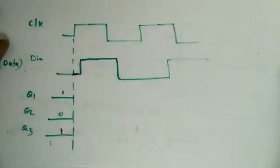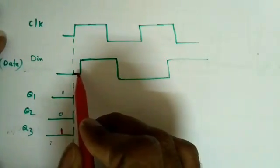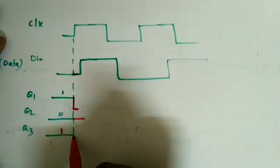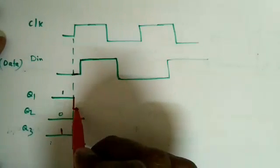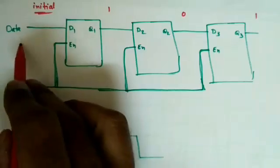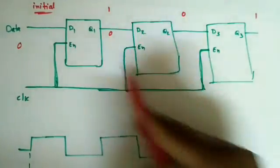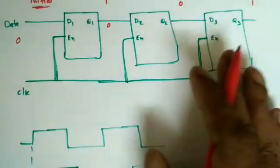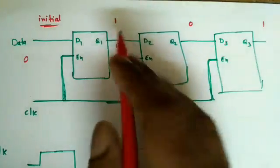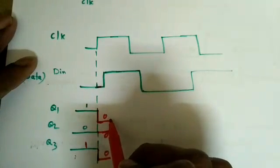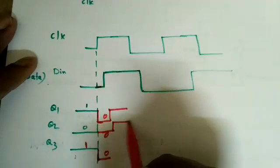Since all three latches use the same clock, the moment the clock is high all three flip-flops work simultaneously. Whatever change occurs in Q1 — it goes down to 0 — then the second latch follows Q1, and Q2 also goes to 0. All three become 0-0-0 because all are working with the same clock. The moment data 0 is initiated at the first latch, it transfers to the second, which transfers to the third, and so on.